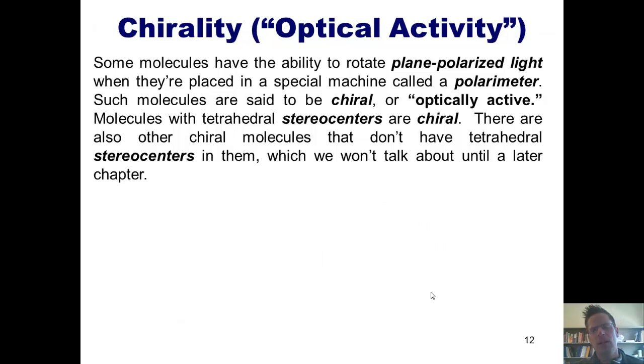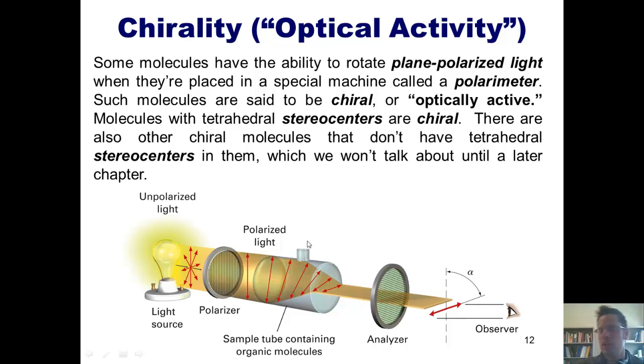Now some molecules have the ability to rotate plane polarized light when they're placed in a special machine called a polarimeter, which I've pictured here. I don't want you to get bogged down in the details of how this machine works. I just want you to understand that there are certain molecules where if I dilute them and put them into a machine like this, the machine will fire plane polarized light at those molecules, and the molecules will rotate the light in one direction or the other. Such molecules are said to be chiral, or optically active.